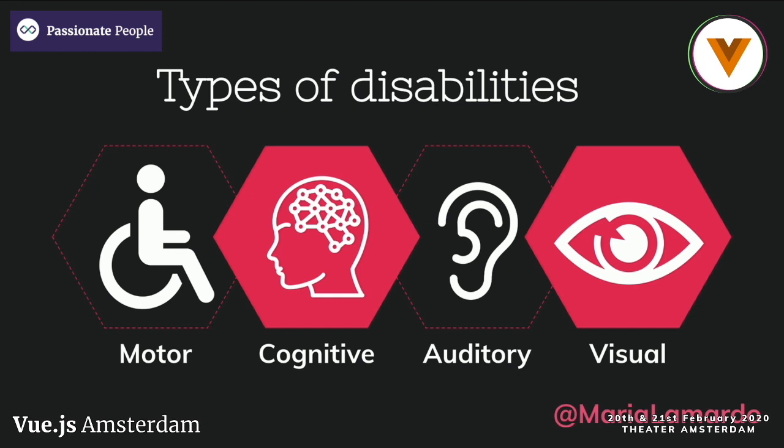There are different types of disabilities: motor, cognitive, auditory, and visual disabilities. When you're creating applications, you have to take all of these into consideration, as different types of disabilities will create different user experiences when navigating your websites. When thinking about accessibility techniques, you don't only have to look at screen readers — think a little bit wider, like people who are color blind or have motor impairments that make it difficult to use a mouse.